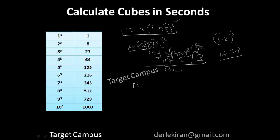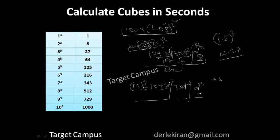Now let us calculate the cube of 13. Again we have the standard structure: difference cube | 3 into difference square and 10 | plus 3 into difference — single digit, single digit, remaining. 13 is 10 plus 3, so difference is plus 3. Plus 3 cubed is 27; 7 is written, 2 is carried. 3 into difference squared: 3² = 9; 9 into 3 is 27; 27 plus 2 carried plus 6 is 29; write 9, carry 2. 10 plus 3 into difference: 3 into 3 = 9; 10 plus 9 is 19; 19 plus 2 carried is 21. So the cube of 13 is 2197.